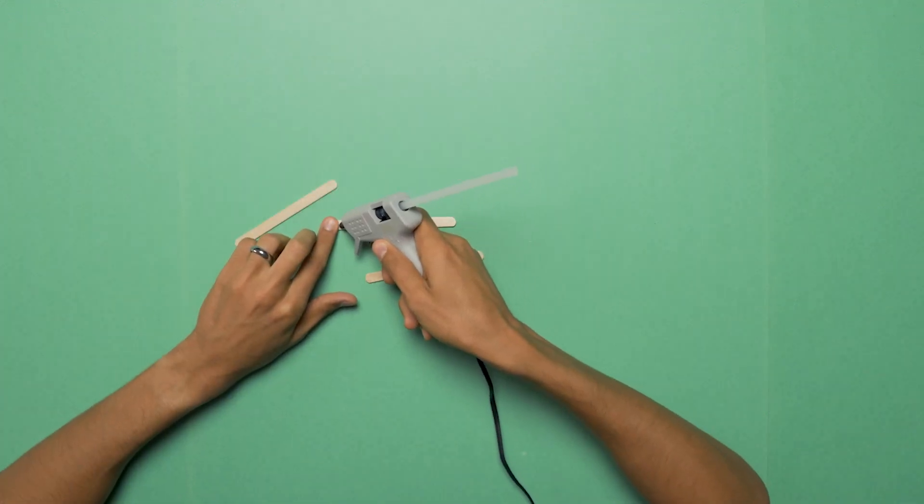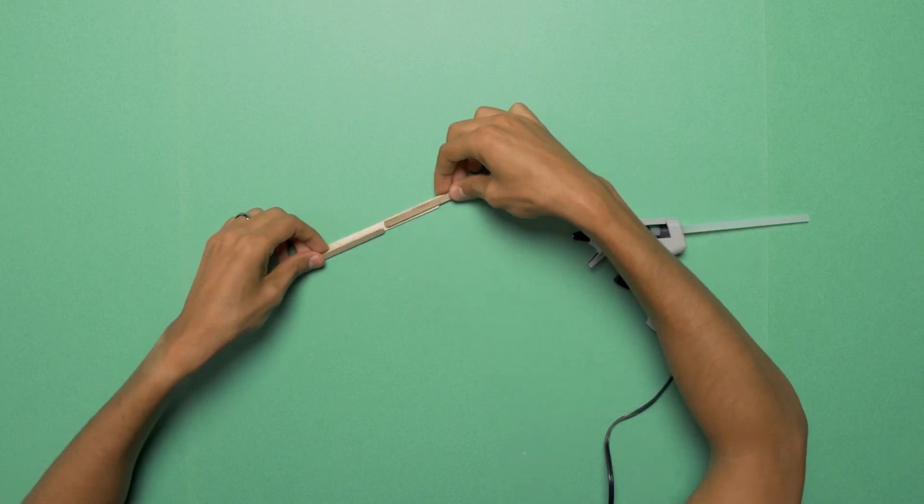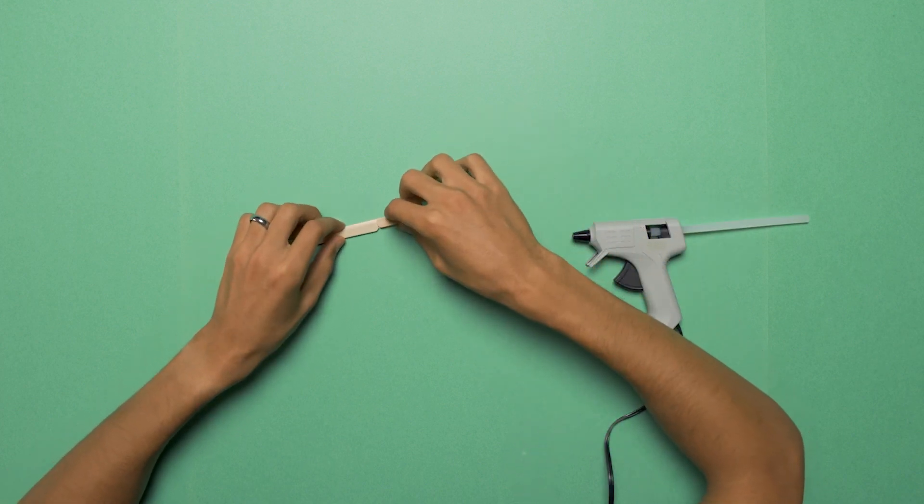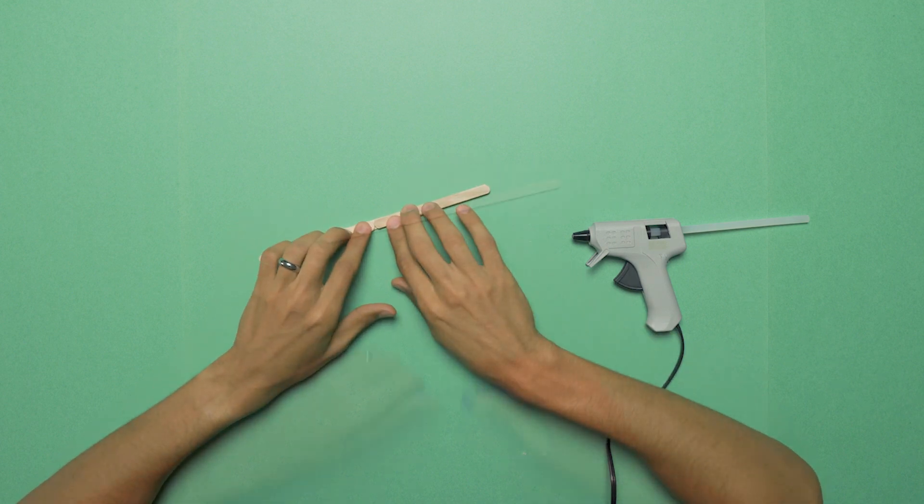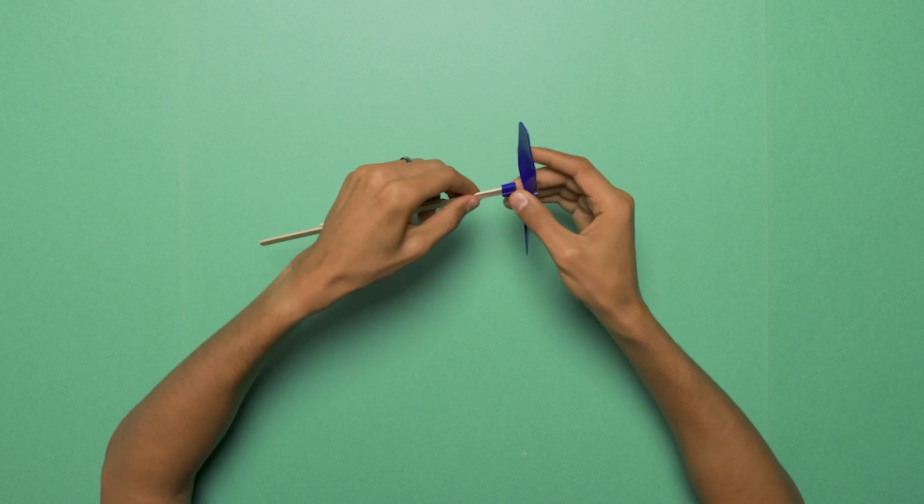Now we need to build the propeller assembly. So we're going to bring back three popsicle sticks, and we're going to overlay them with the glue gun. I'm going to grab our propeller and put that on one end to slide that right on.